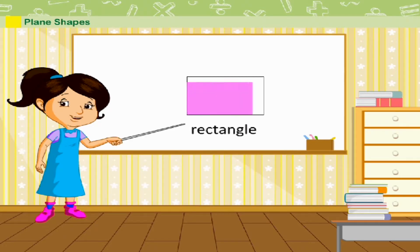This is a rectangle. A rectangle has four corners or vertices and four sides.